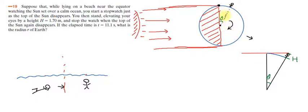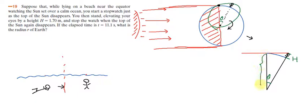Let's focus on only this area. Geometrically, this is the picture of this situation. This is the radius of the Earth, so this distance is also the same radius R. Since this is the center of the Earth, we can set up our geometry.